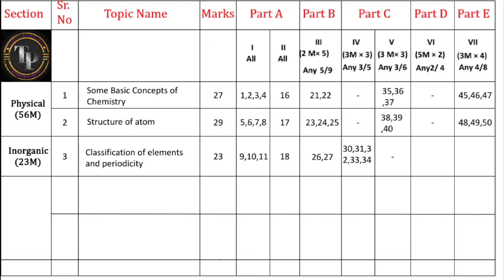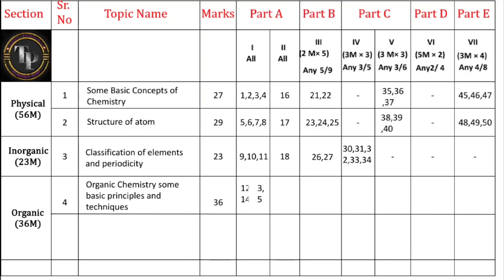All inorganic three-mark questions are theory only. For organic chemistry, only one chapter is covered — General Organic Chemistry (Some Basic Principles and Techniques) — carrying 36 marks. It has four MCQs (questions 12–15), two fill in the blank questions, two two-mark questions, and four five-mark questions (41–44) in Part D of which you answer any two. Additionally, two numerical problems (questions 51 and 52) are asked from organic chemistry in Part E.